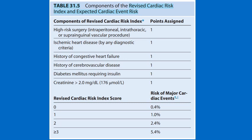One of the most important risk indices is the Revised Cardiac Risk Index (RCRI). Points are assigned for: high-risk surgery (intraperitoneal, intrathoracic, or suprainguinal vascular surgery), history of ischemic heart disease, cerebrovascular disease, congestive heart failure, diabetes mellitus, and renal failure — each scoring 1 point, giving 6 risk parameters total. When the RCRI score is 0, the risk of major cardiac events is less than 0.4%. When the score is more than 3, the risk goes up to 5.4%.